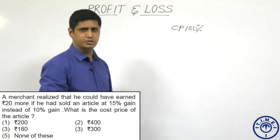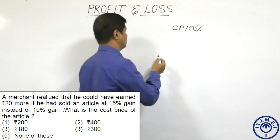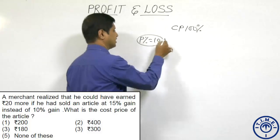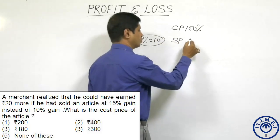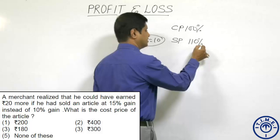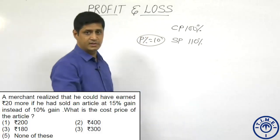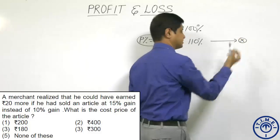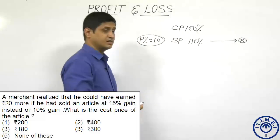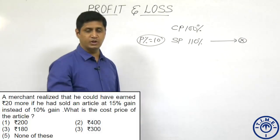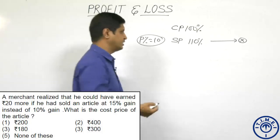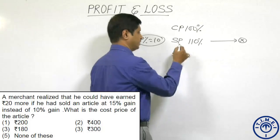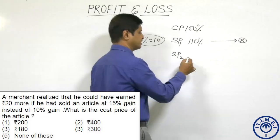The first profit percent is 10 percent. When the profit percent is 10, the selling price is 110 percent of its cost price. The value of the selling price is assumed as X. The condition is that he earned ₹20 more by selling the article at 15 percent profit. This is the first selling price and the second selling price.